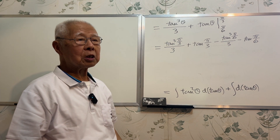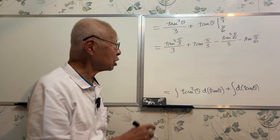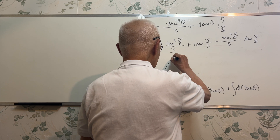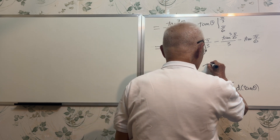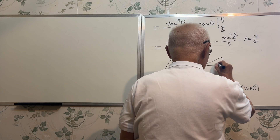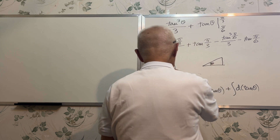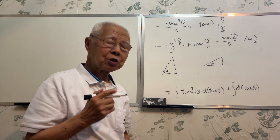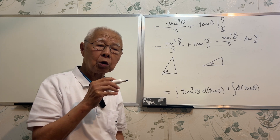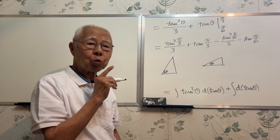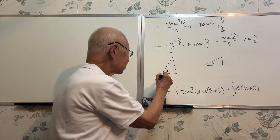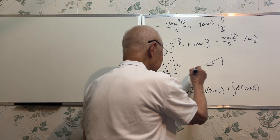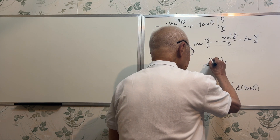My way of remembering trigonometric values is drawing a triangle. Draw two triangles — one 60 degree, one 30 degree. Put in the ratio of the three sides. Remember, it's 1, 2, root 3. The shorter side is 1, the longer side is 2, the third side is root 3.